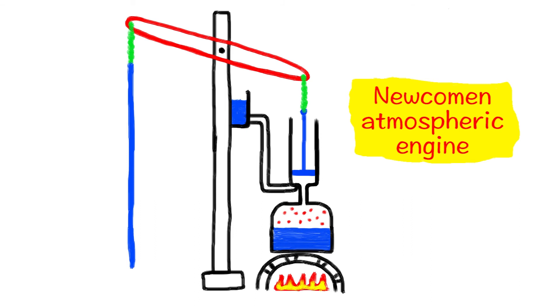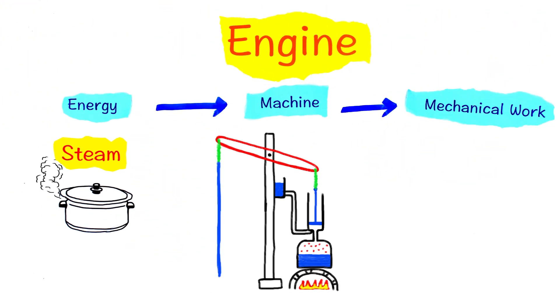Steam engines improved a lot and were adjusted to do a variety of jobs. Their invention fueled the industrial revolution because now we didn't have to be near a water stream or a windy location to run our machines. Now we can build a steam engine anywhere and use it to do work for us.